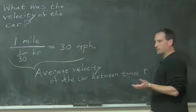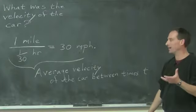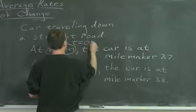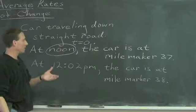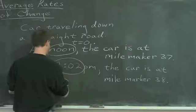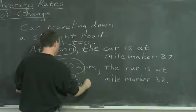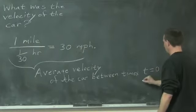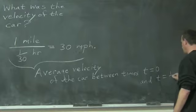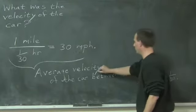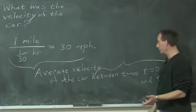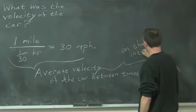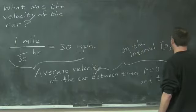We'll call noon time zero, so this is the average velocity between T equals zero and T equals one-thirtieth of an hour, or on the interval from zero to one-thirtieth of an hour.